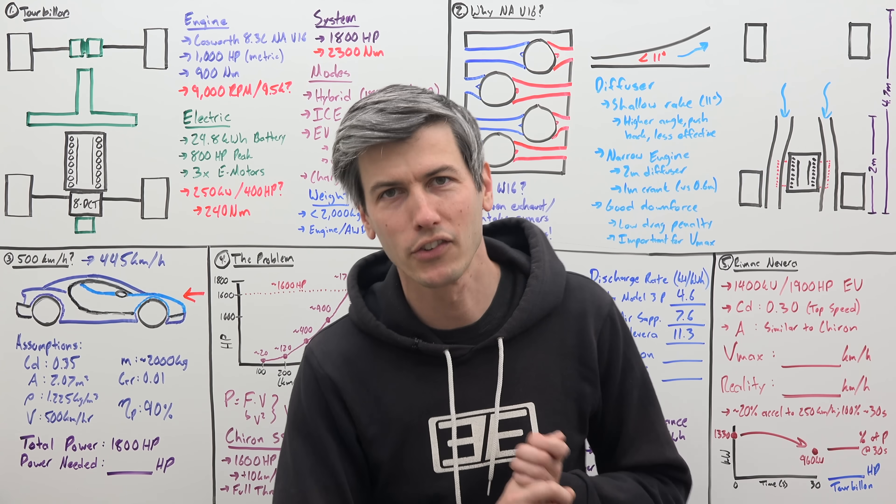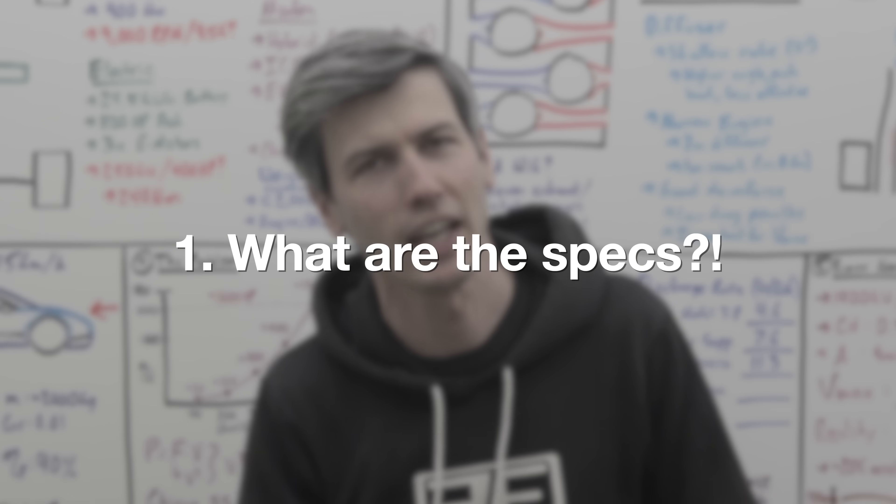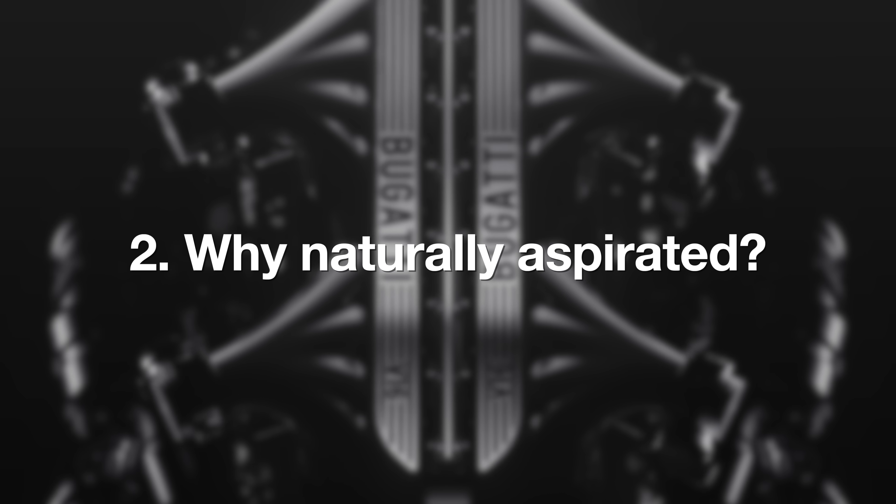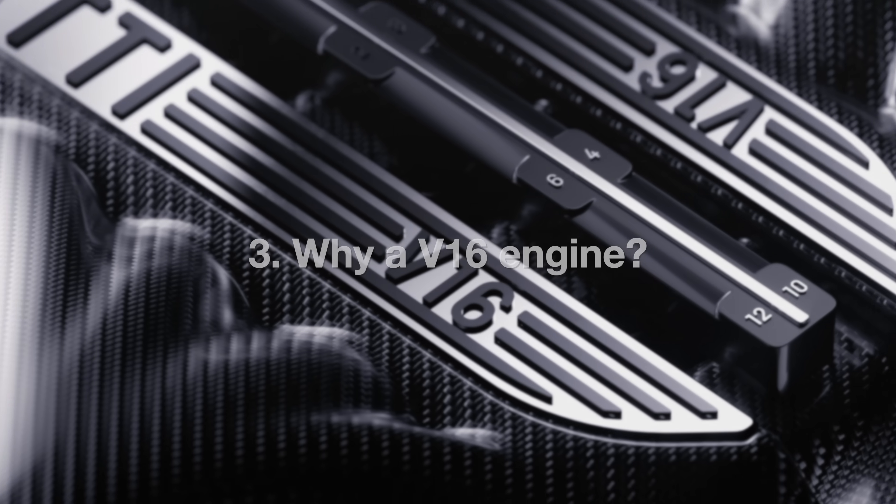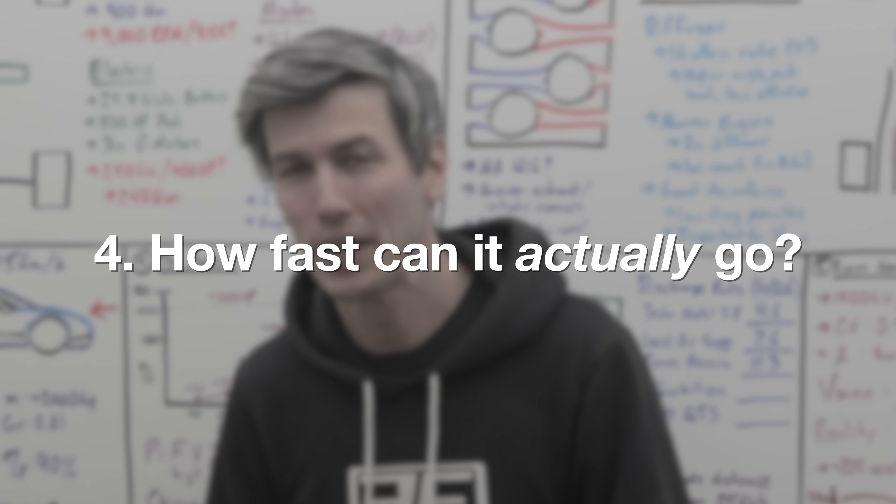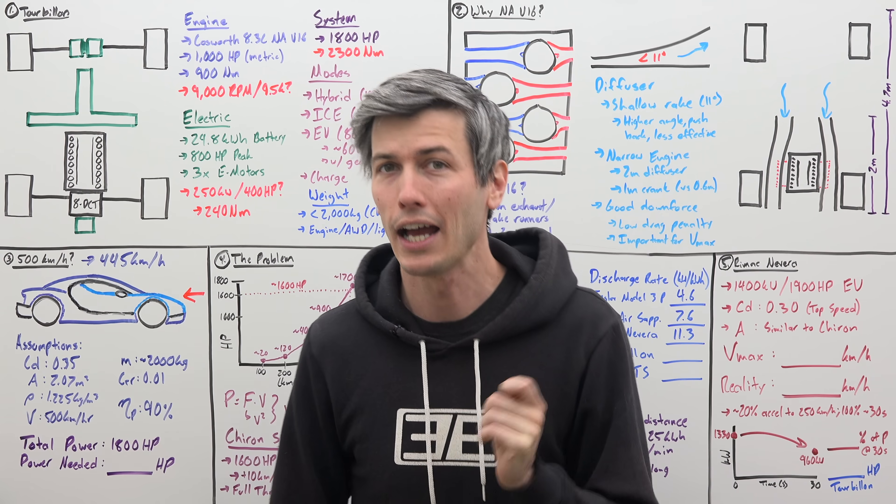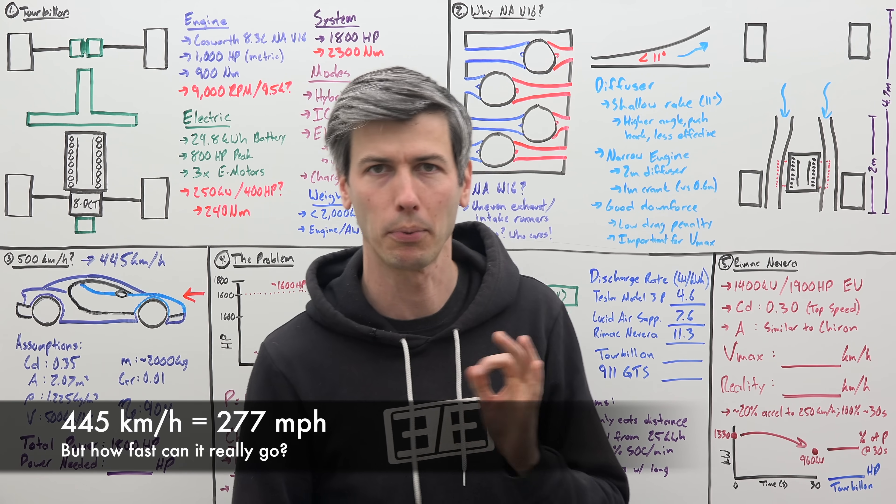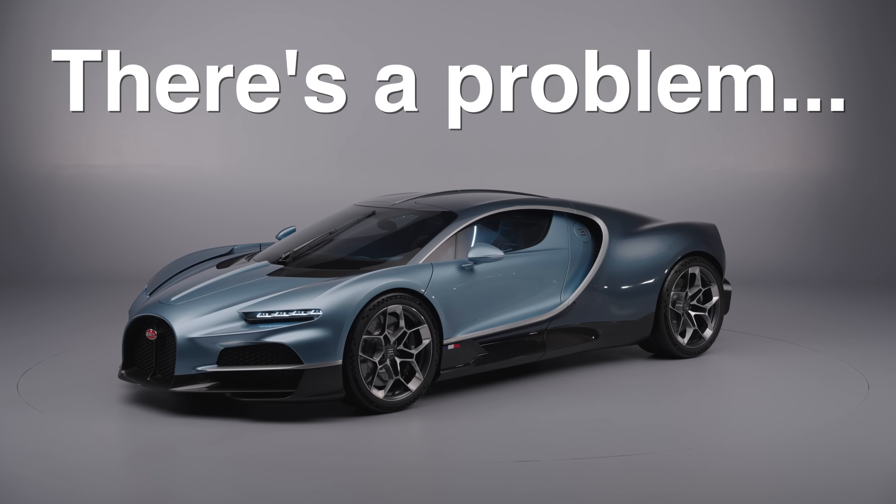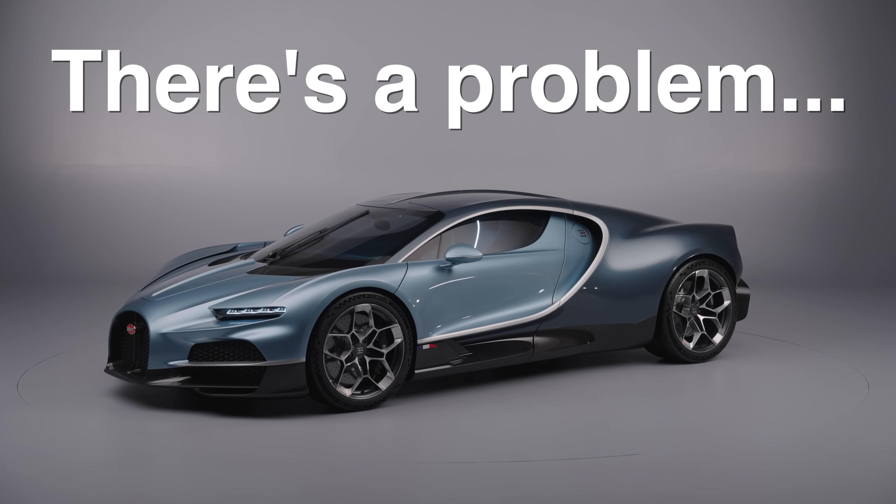So to better understand this Bugatti, I want to discuss four main subjects. First of all, we have all the specifications now, let's go over it. Second, why did they choose to go naturally aspirated? Third, why did they choose a V16 engine? And finally, how fast can it actually go if it didn't have that limiter at 445 kilometers per hour? And that final question leads us to a very interesting problem this car suffers from.